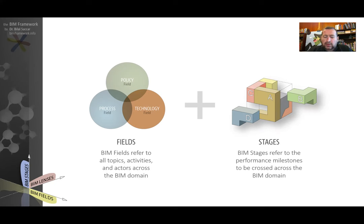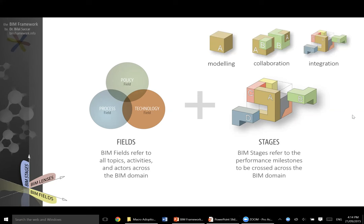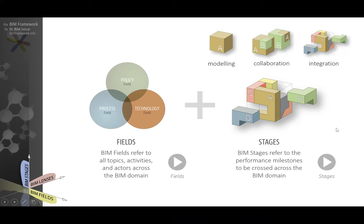BIM stages refer to the minimum capability or performance milestones. There are three main stages: modeling, where a company is doing object-based modeling using software; model-based collaboration, where they are collaborating by exchanging and interchanging models; and network-based integration, where they are using a network or model server to integrate models together and generate specific deliverables. If you'd like to learn more about stages and fields, please watch the videos using the links provided below.